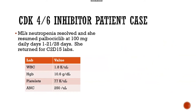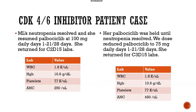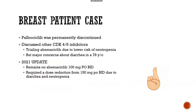She returned for cycle 2 day 15 labs and her ANC was 250 — this is an actual patient case. We held her palbociclib again, let the ANC recover, and dose-reduced to 75 mg. At cycle 3 day 15 labs, her ANC was still 450. After three attempts with dose reductions, palbociclib was permanently discontinued and we discussed other CDK4/6 inhibitors. In 2020, we switched to abemaciclib because of its decreased risk of neutropenia. She required an initial dose reduction but found her sweet spot and remains on therapy to this day — it was a rocky road, but she's doing wonderfully.